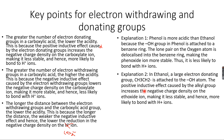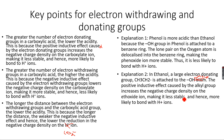In ethanol, a large electron-donating group CH₃CH₂ is attached to the OH group. The positive inductive effect caused by this alkyl group increases the negative charge density on the ethoxide ion, making it less stable and hence more likely to bond with H⁺ ions.